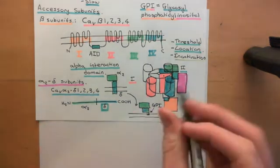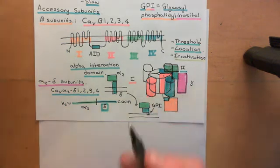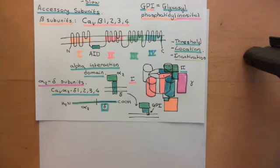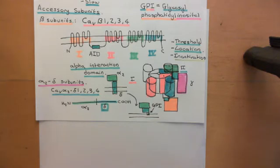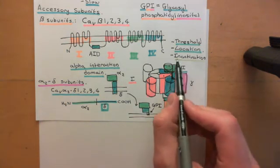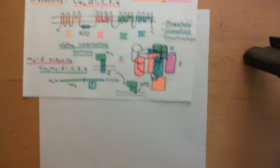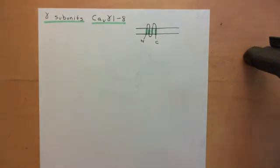Many voltage-gated calcium channels have all three accessory subunits: a beta, an alpha-2 delta, and a gamma subunit. The gamma subunit is involved in changing the threshold potential for activation — what voltage you must depolarize to in order to get the alpha-1 subunit to open — and it also affects the speed at which the alpha-1 subunit inactivates. So those are two key properties modified by the gamma subunit.